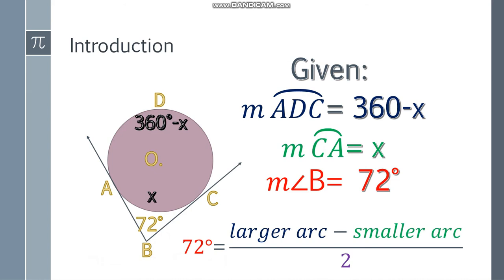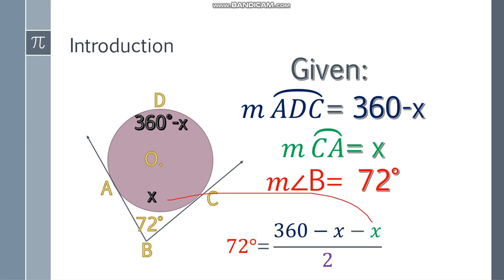So let's substitute. Of course the 72 here. The larger arc, that will be 360 minus X. Then the smaller arc, which is just X. So we have 360, 360 minus X, minus X. Simplify it further and we have 360 degrees minus 2X.